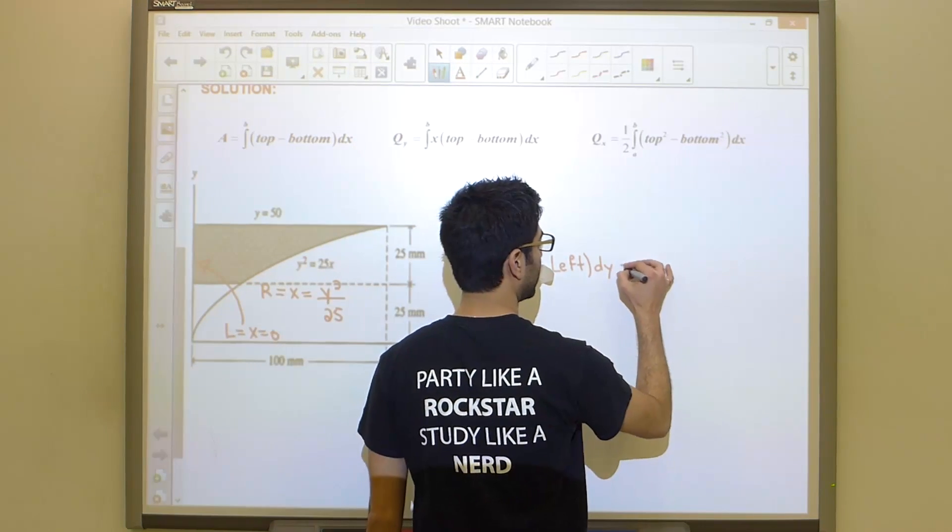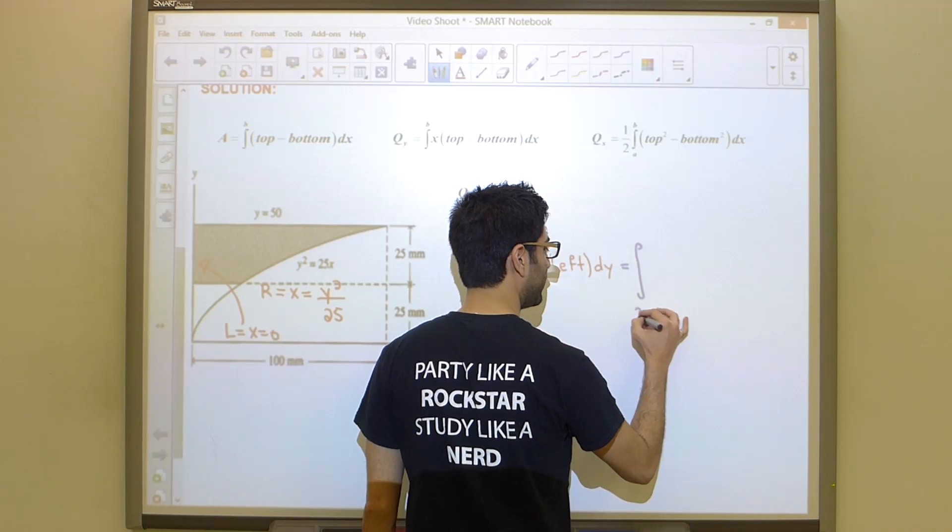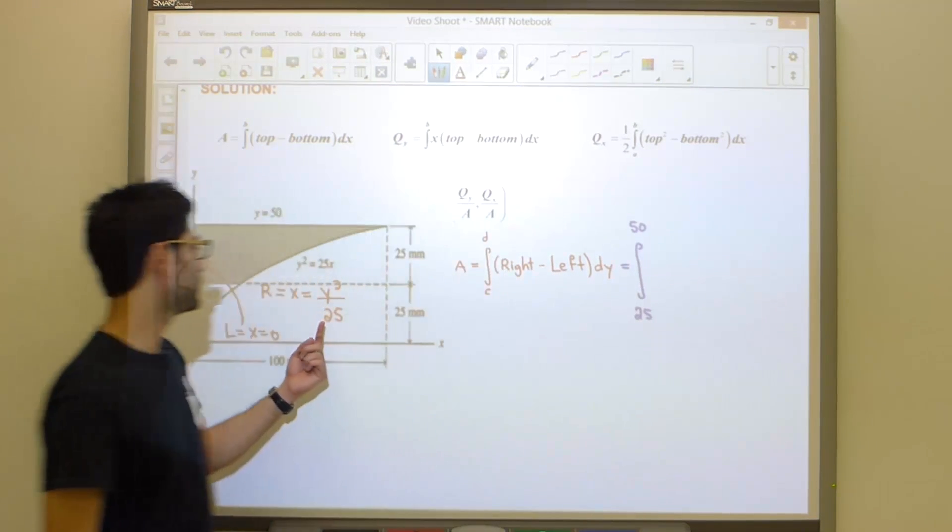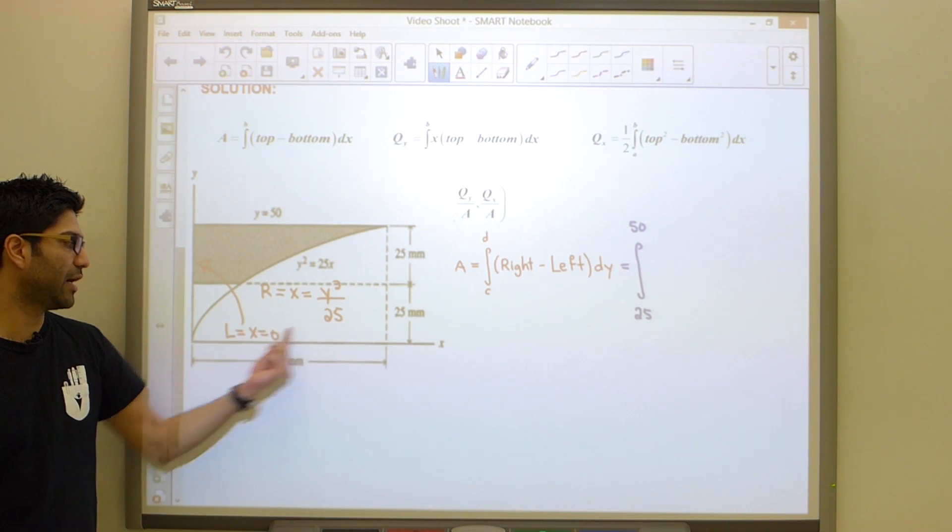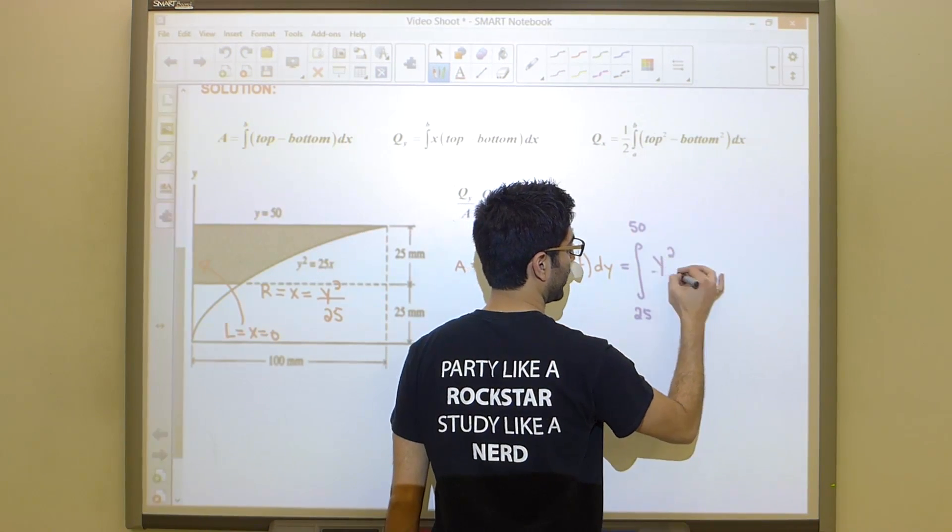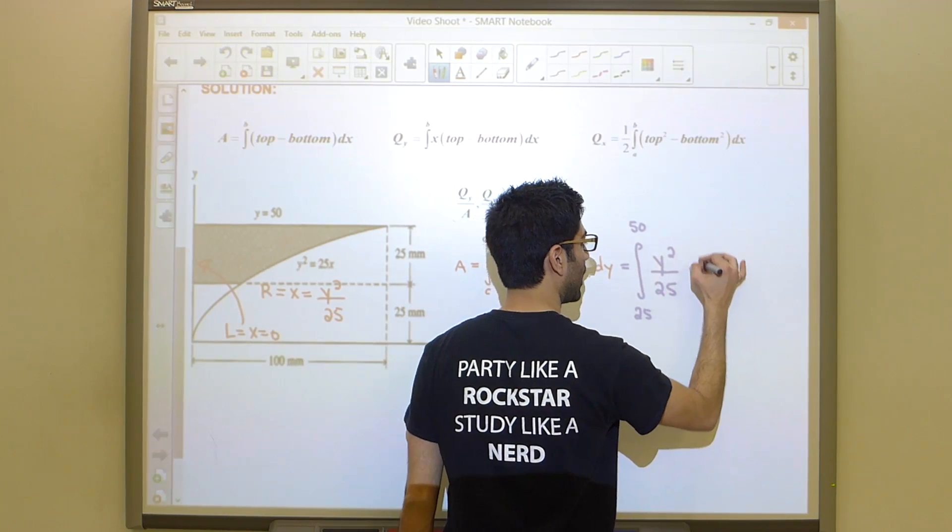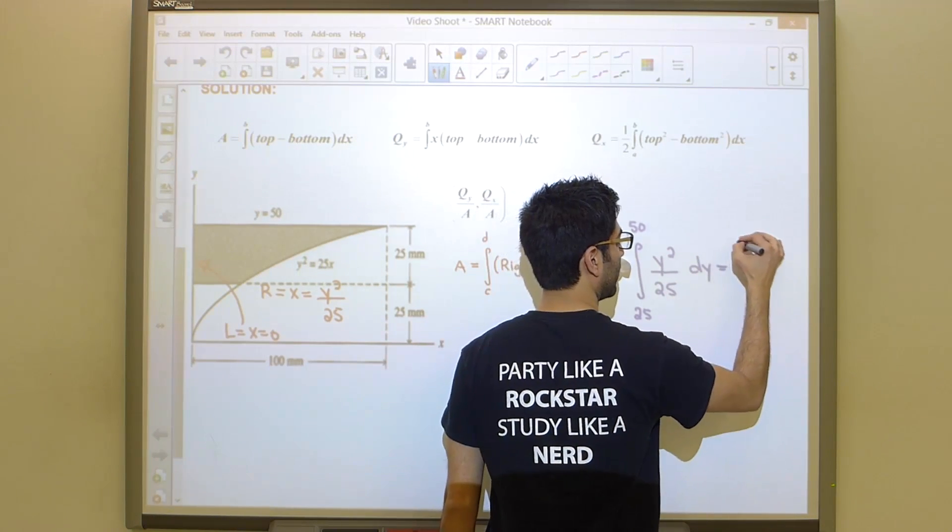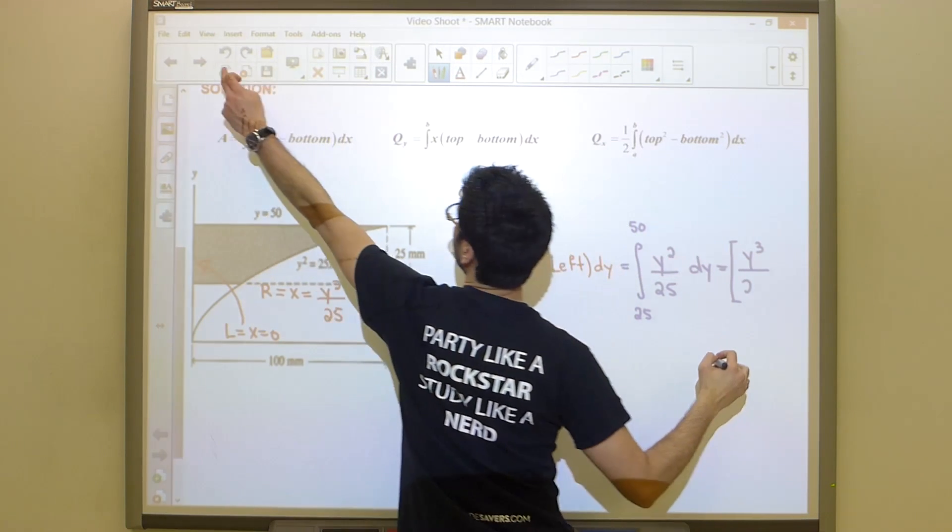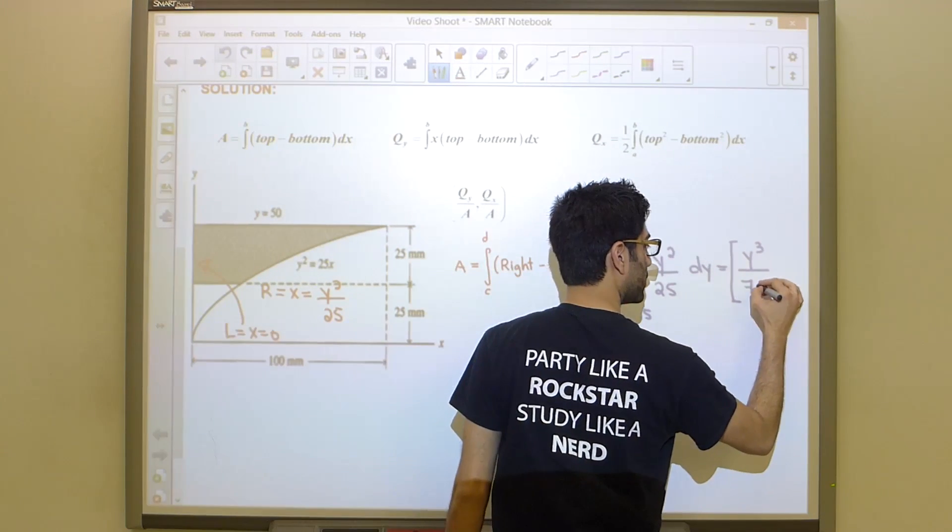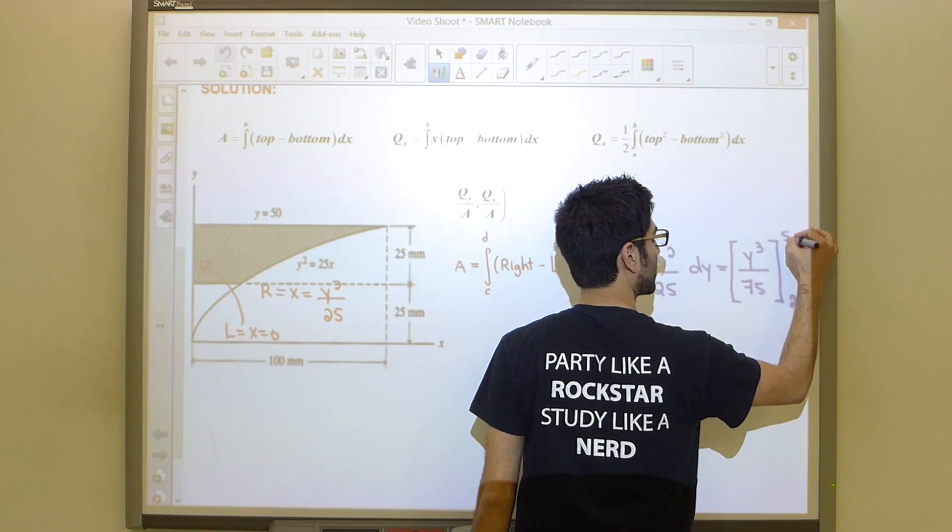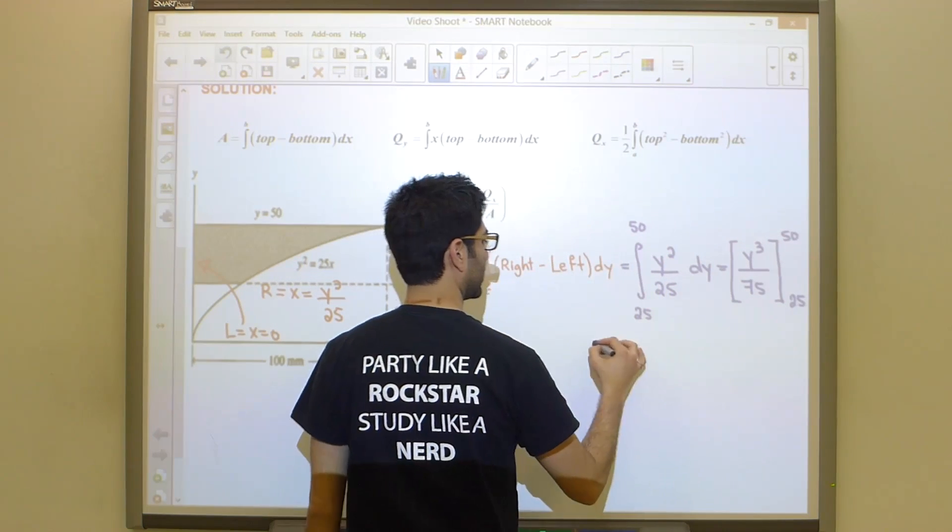Setting this up, we see that we're going from 25 to 50, and we're simply doing right minus left. Now right is y squared over 25 and left is simply 0. So we just need to integrate y squared over 25 dy. And so that's going to give us y cubed over 75, going from 25 to 50.